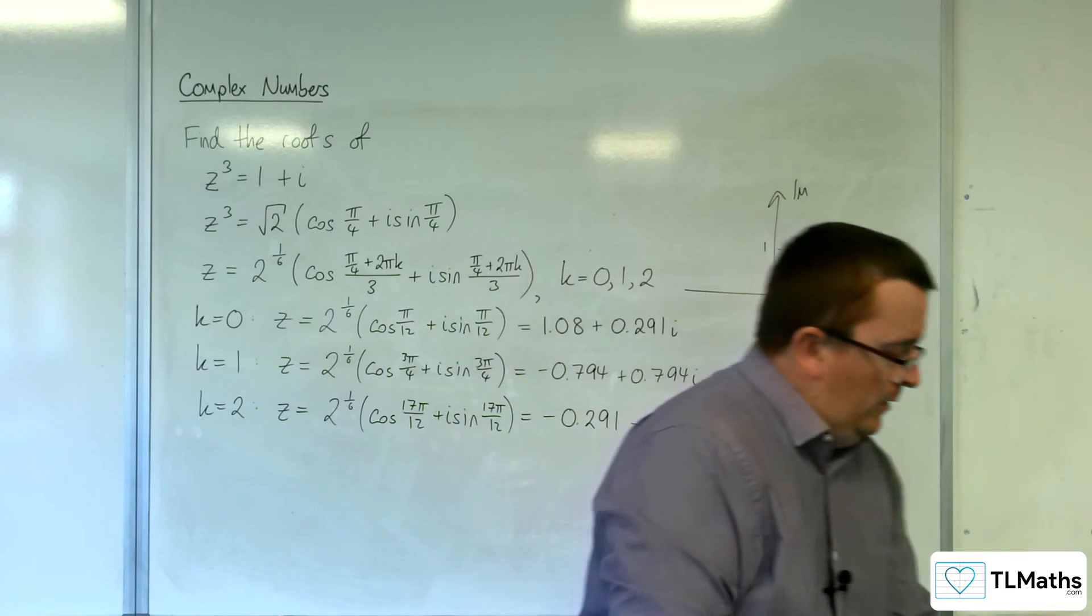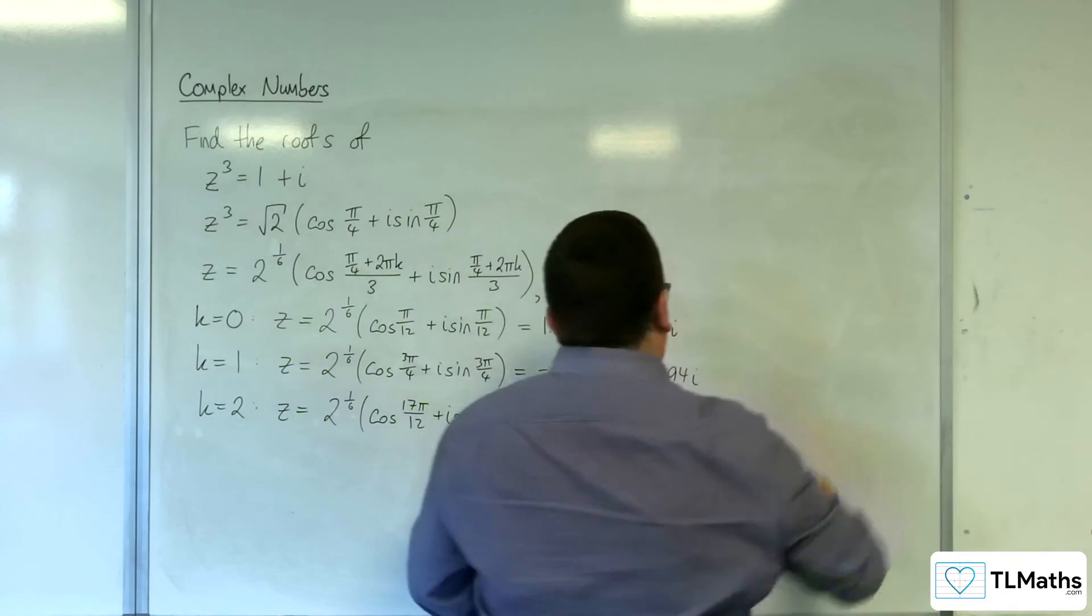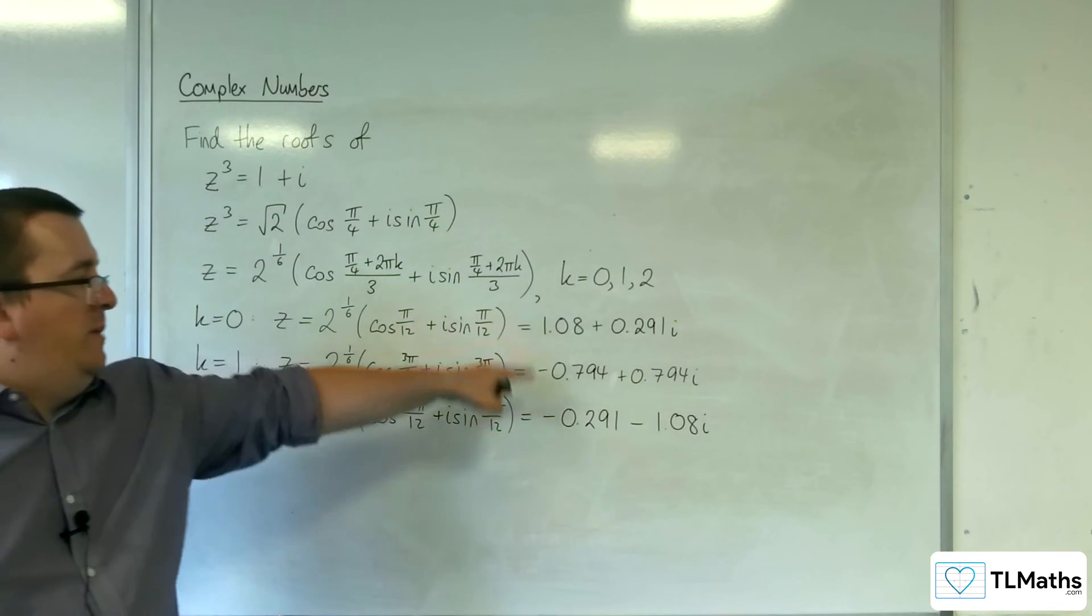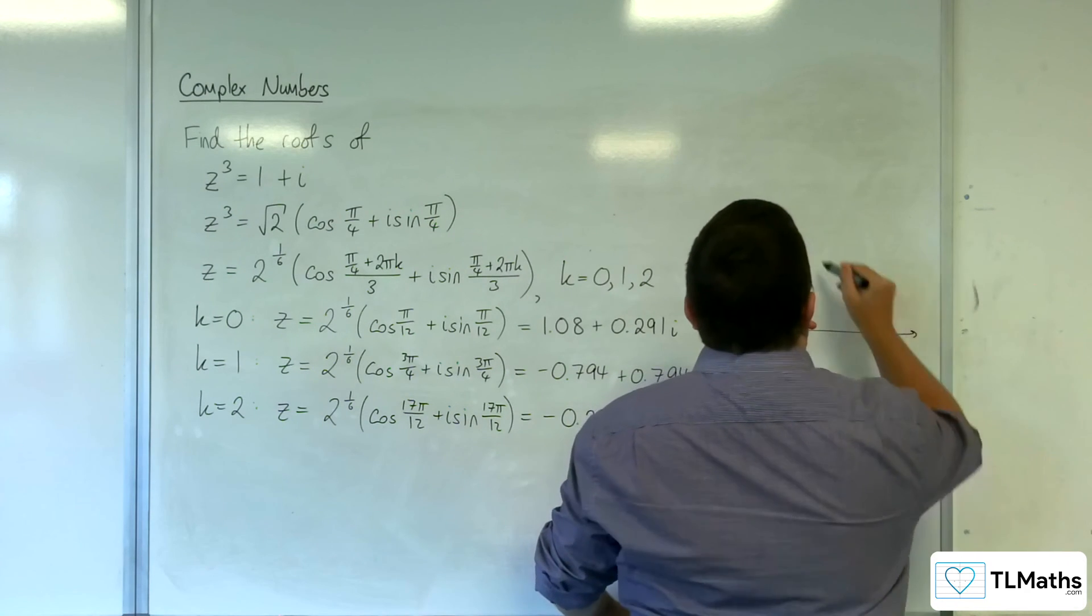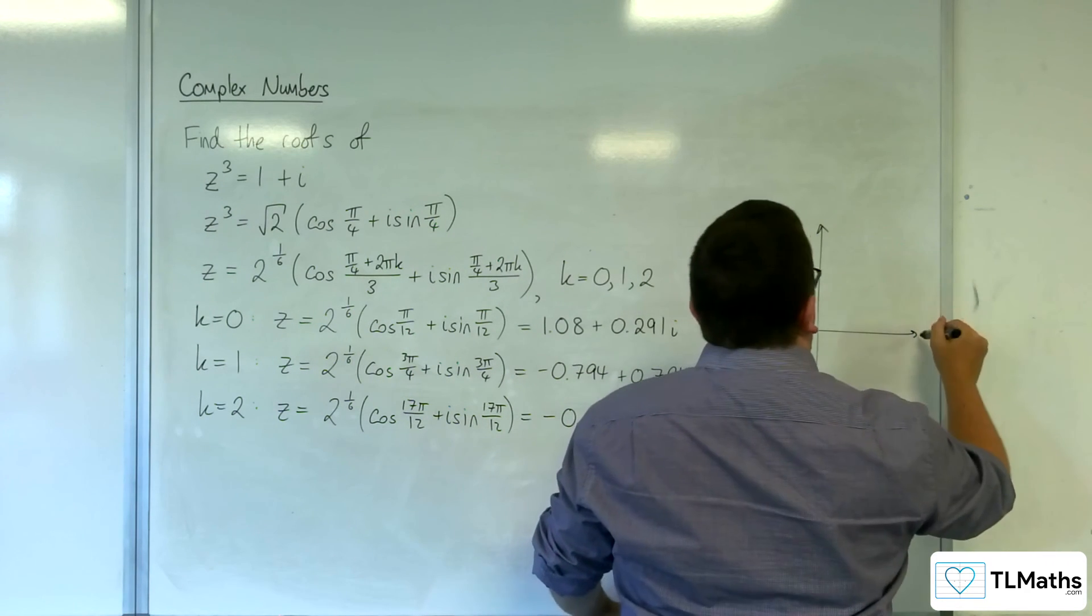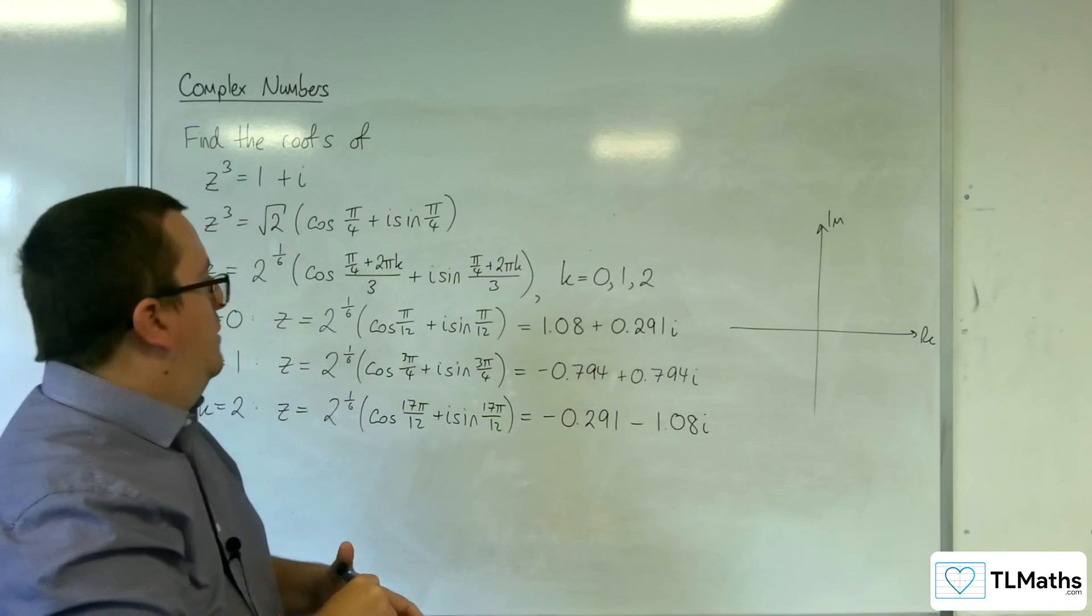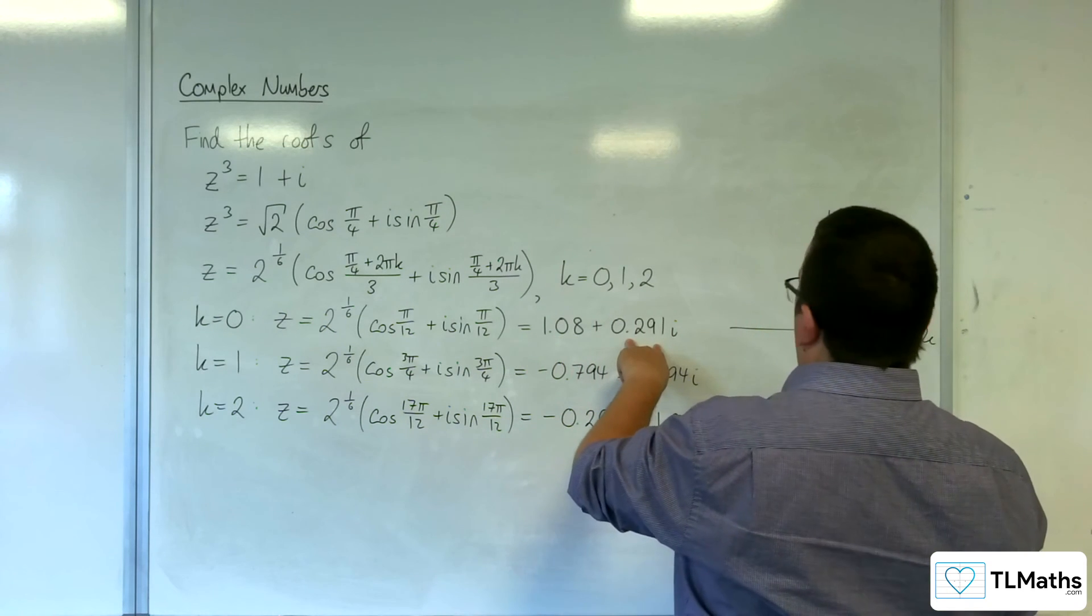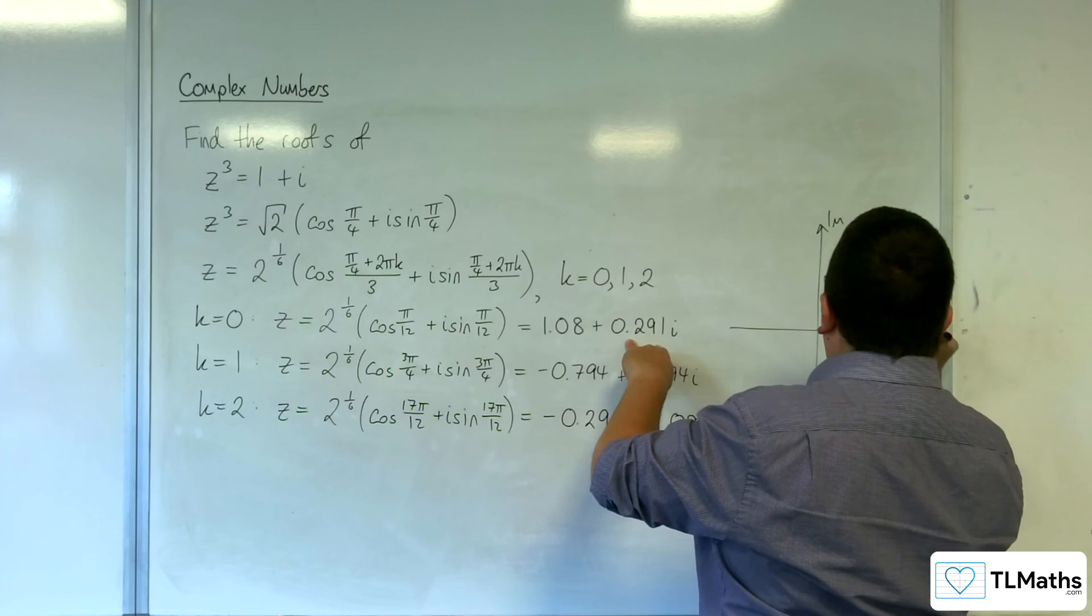So what we've got here is our three points that are going to form a triangle. So 1.08 plus 0.291i, something like that.